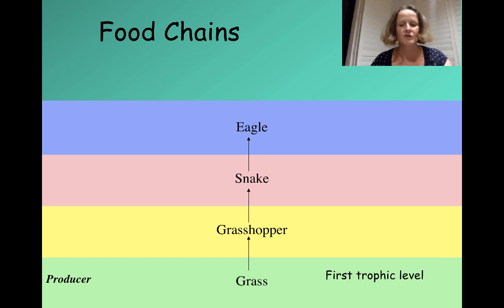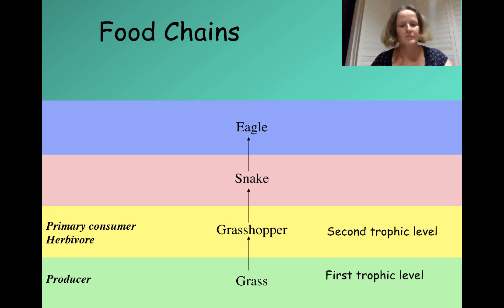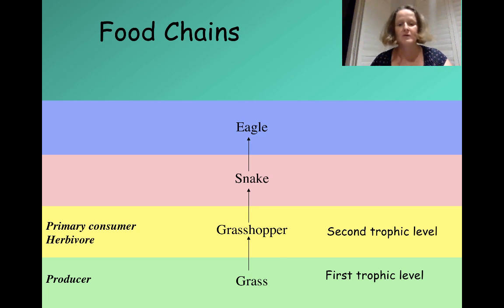This is our first feeding level in a food chain, and the scientific term for that is the first trophic level. As we move up, grasshoppers eat grass, so they're herbivores — they're eating plant matter. They're also known as primary consumers because they are the first to consume the organic molecules, and this is the second trophic level.